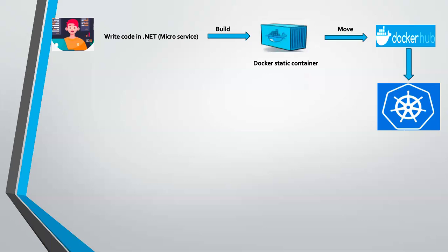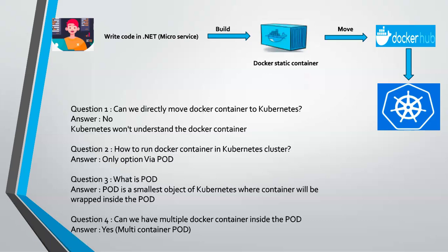A pod is the smallest object of Kubernetes. If you want to run a Docker container inside Kubernetes, you must wrap your Docker container inside a pod — that object is called a pod. So the definition of a pod is: it is the smallest object of Kubernetes where a container is wrapped inside it.